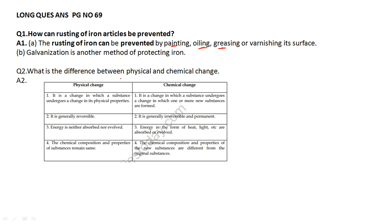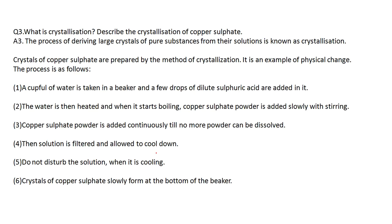Physical change is a change in which no new substance is formed; chemical change is a change in which a new substance is formed. Physical change is reversible; chemical change is irreversible and permanent. In physical change, energy is neither absorbed nor evolved; in chemical change, energy is in the form of heat, light, etc. The chemical composition of the substance remains the same in physical change, but in chemical change the composition of the new substance is different. For example, paper torn remains paper, but food eaten is digested and excreted as waste.